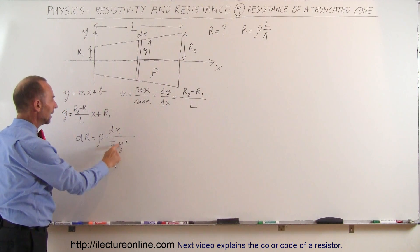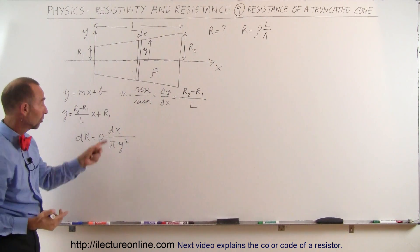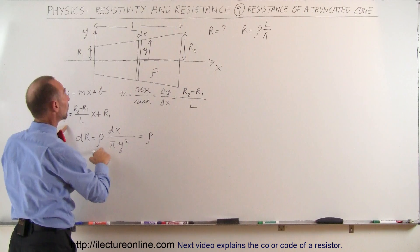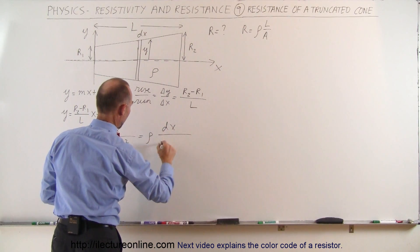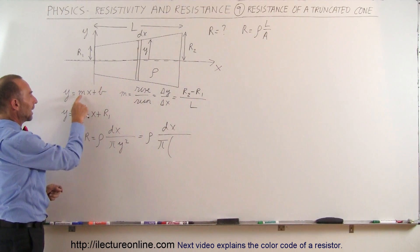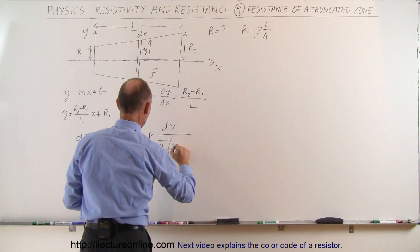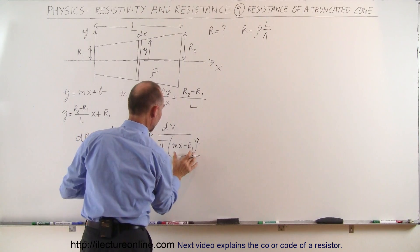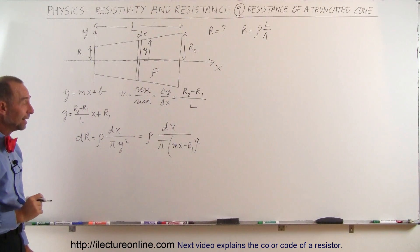Now of course I can't have a y and a dx in the same equation, so I want to change y to what y is equal to. We can go ahead and write this as rho times dx divided by pi times y squared, and y squared is this quantity right here. To make it easy, I'm going to write mx plus R1, so m represents (R2 minus R1) over L. So it would be (mx plus R1) quantity squared — that is equal to y squared — and I've changed y to an x variable. Now we can go ahead and integrate that.